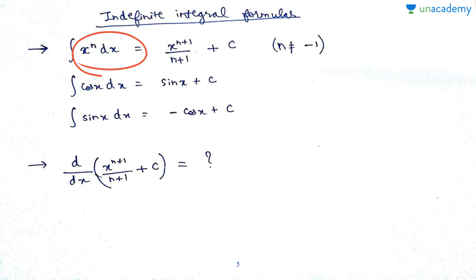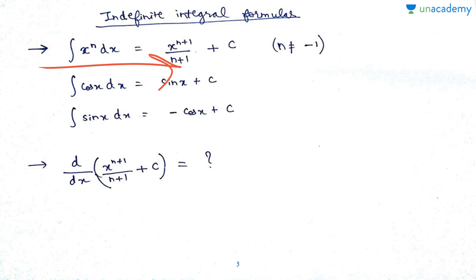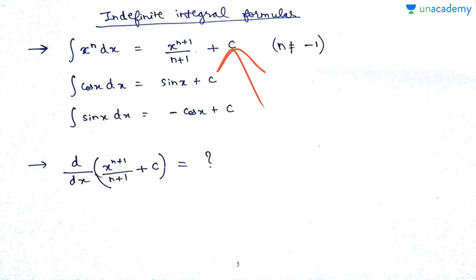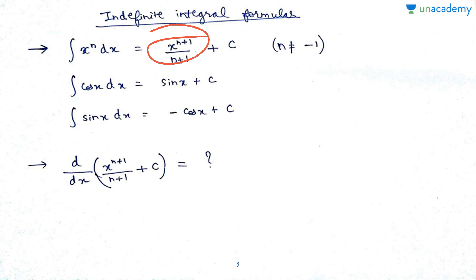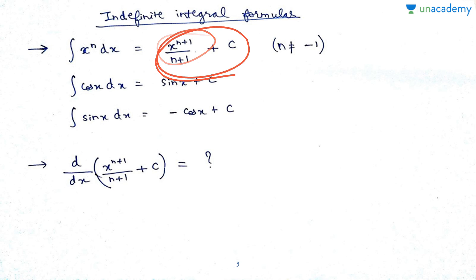The integration sign represents integration. The general formula is: the integral of x^n with respect to x equals x^(n+1) / (n+1) + C, where C is a constant. To verify this, if you differentiate x^(n+1) / (n+1) + C, the differentiation of C is zero, and you get (n+1) * x^n, where (n+1) in the numerator cancels with (n+1) in the denominator, leaving x^n.